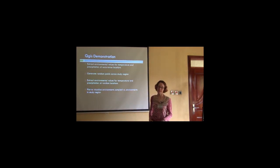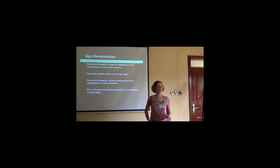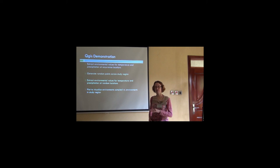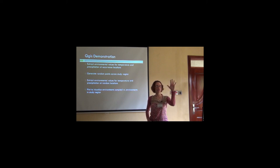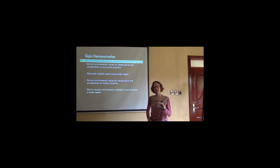Now we're going to do this in QGIS to show how to have your occurrence points extract environmental values, and also how to extract environmental values from random points across your study area. Then we're going to visualize whether the sampled areas from your occurrence points are really representative of the environments across your study region.